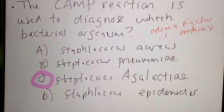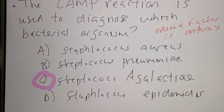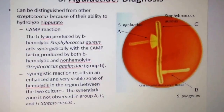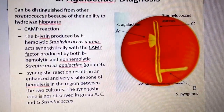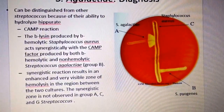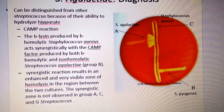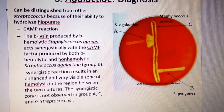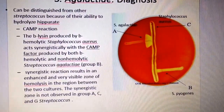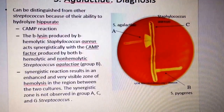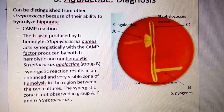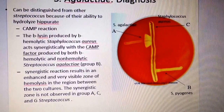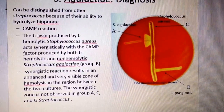Let's think about the CAMP reaction and look at this slide. For the CAMP reaction, the β-lysin produced by β-hemolytic Staphylococcus aureus acts synergistically with the CAMP factor produced by both β-hemolytic and non-hemolytic Streptococcus agalactiae, which is Group B.